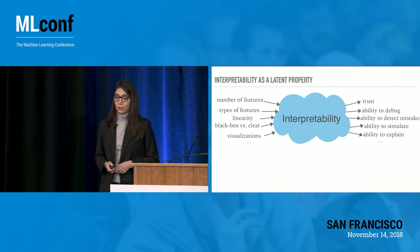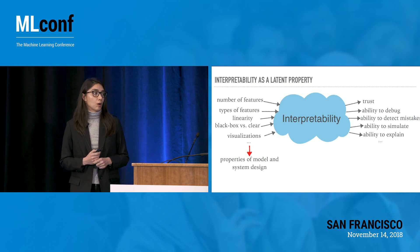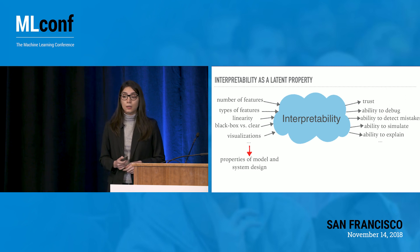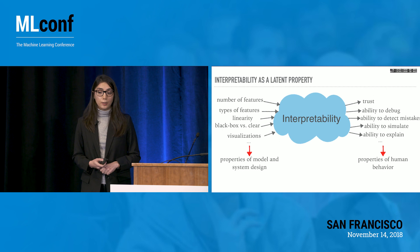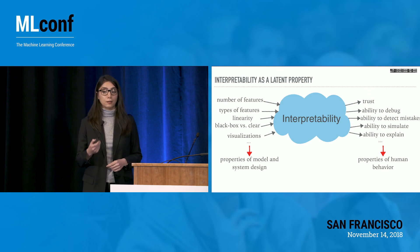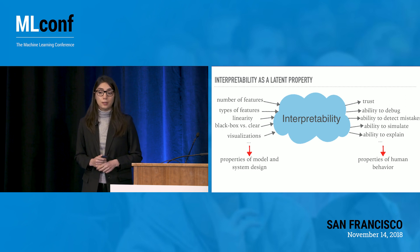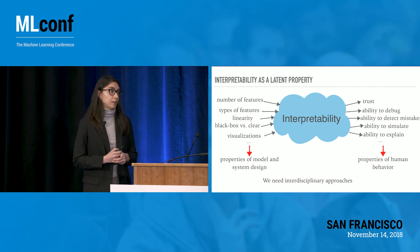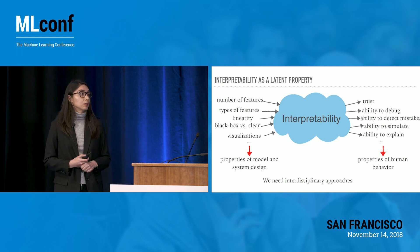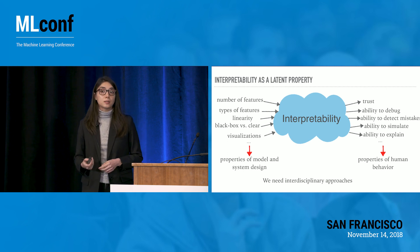When we look at this picture, we see that while the factors commonly associated with interpretability are properties of model and system design, the outcomes are properties of human behavior. There is no surprise that most research coming out of the computer science and machine learning community focuses on the left-hand side of this picture, mostly ignoring the right-hand side. I want to argue that if we really want to understand interpretability, we need to take interdisciplinary approaches and stop thinking about interpretability as a purely computational and technical problem.